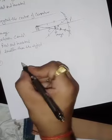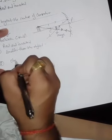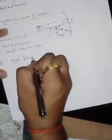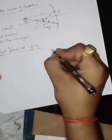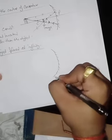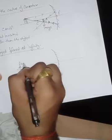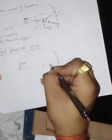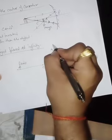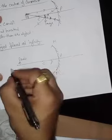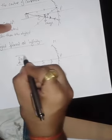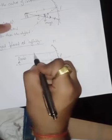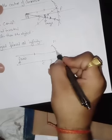Sixth and last point: when the object is placed at infinity. Here is the mirror with principal axis, center of curvature, focus and pole. When the object is placed at infinity, light rays come parallel and after striking the surface move towards the focus.